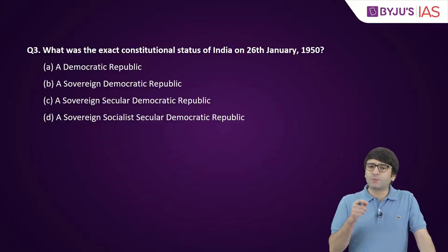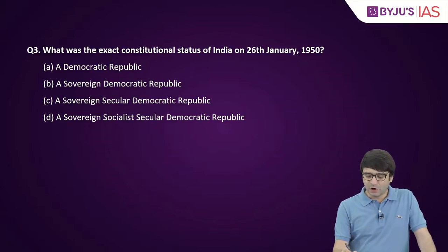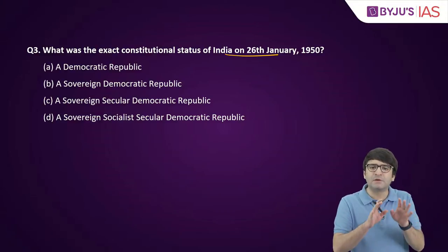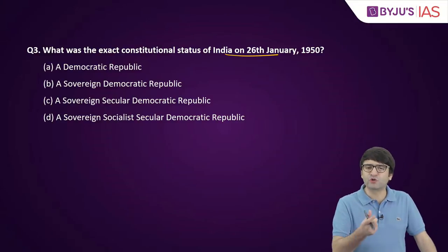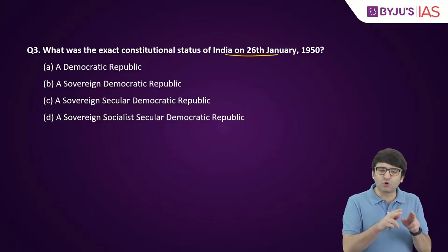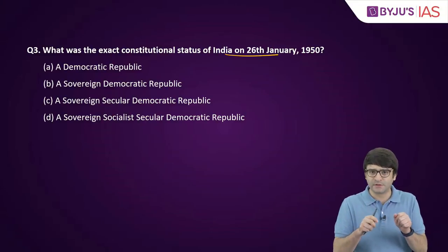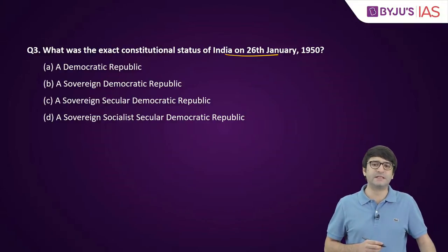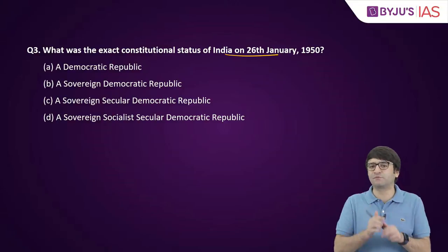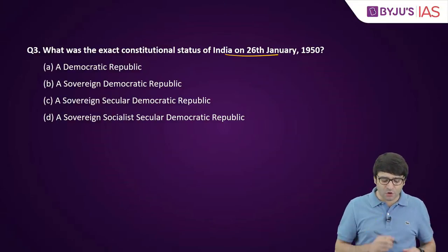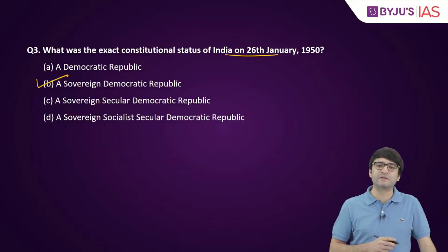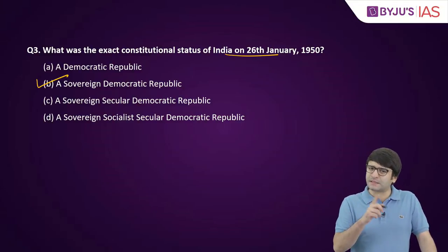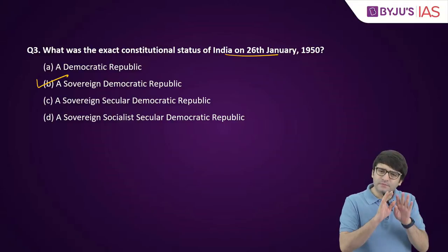Question three: what was the exact constitutional status of India on 26th January 1950? The preamble reads: Sovereign, Socialist, Secular, Democratic, Republic. But socialist and secular were added by the 42nd constitutional amendment act of 1976 — they were not originally part of the constitution. Originally, it was Sovereign, Democratic, Republic. So B is the right answer — a clear, direct factual question.